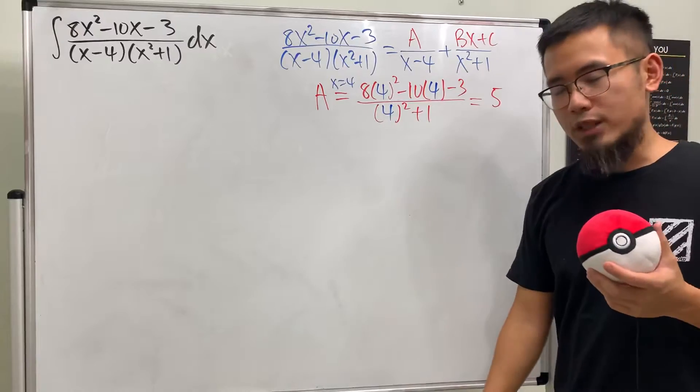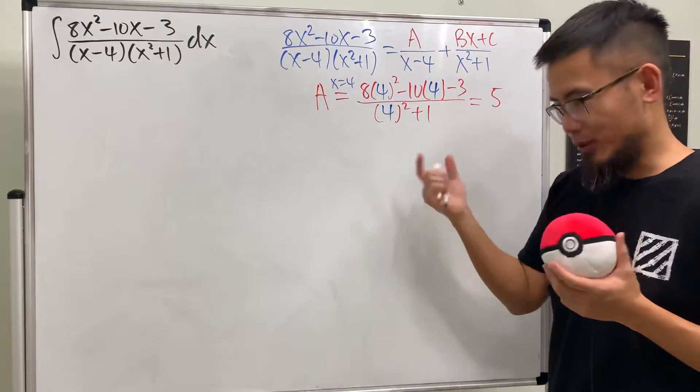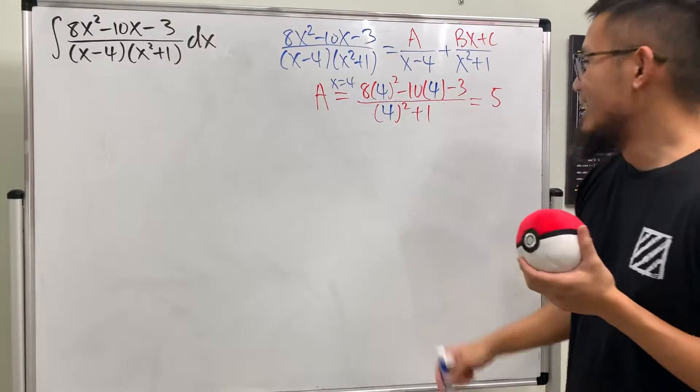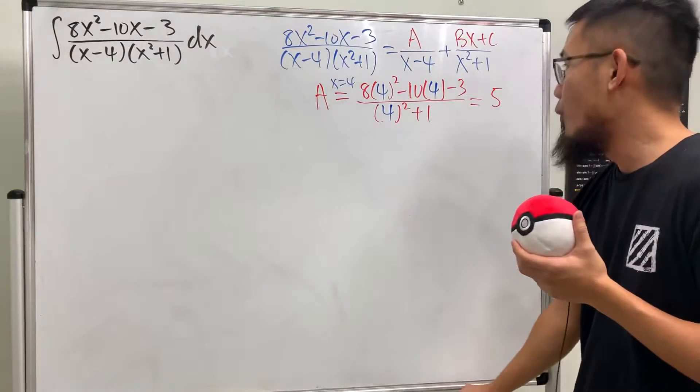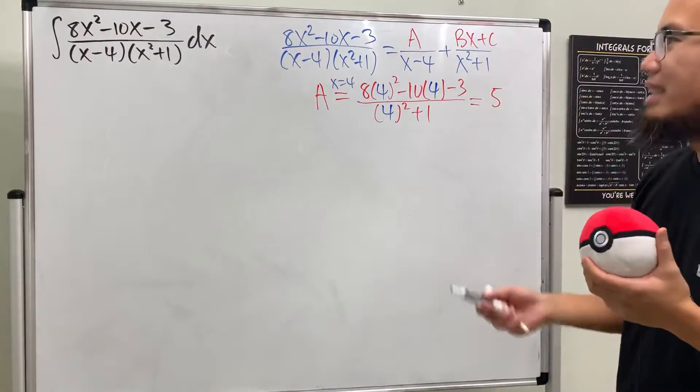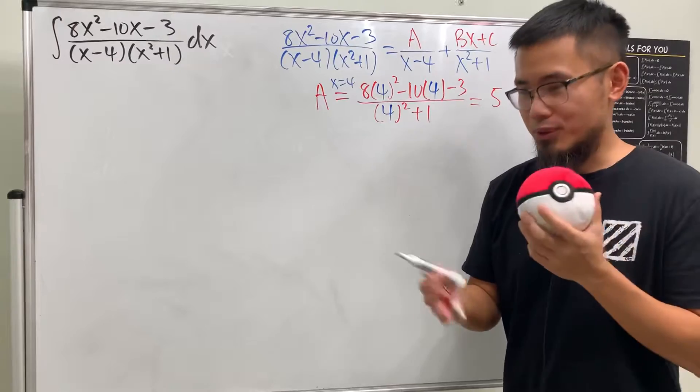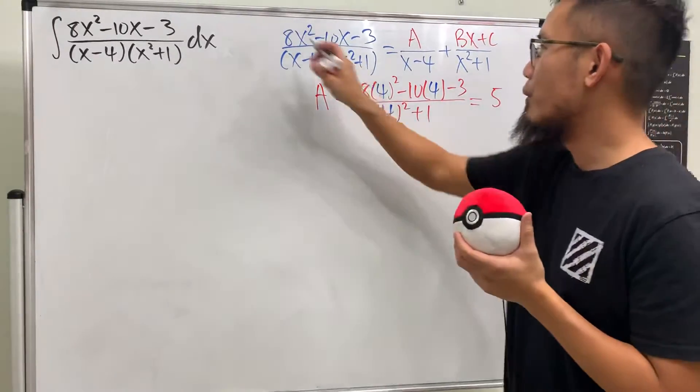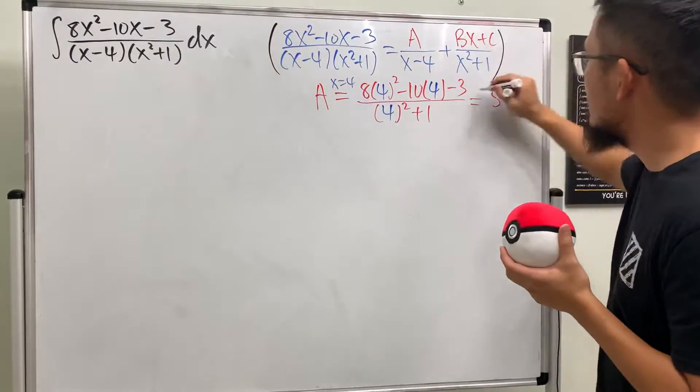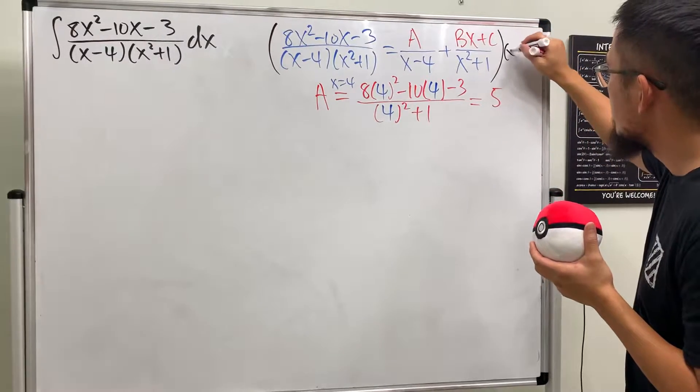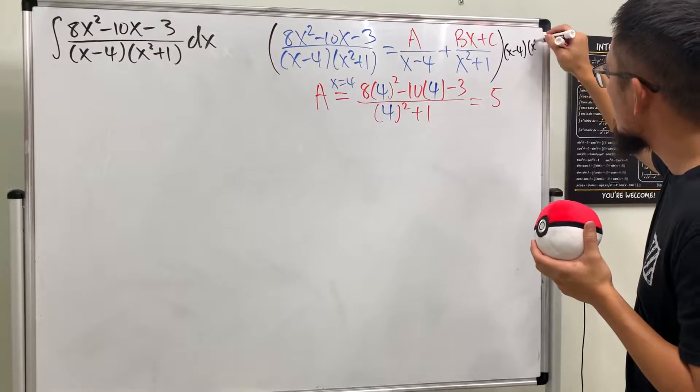Now for B and C, unfortunately we will have to do the traditional way, so I'm just going to multiply everybody by the lowest common denominator, namely (x - 4)(x² + 1).